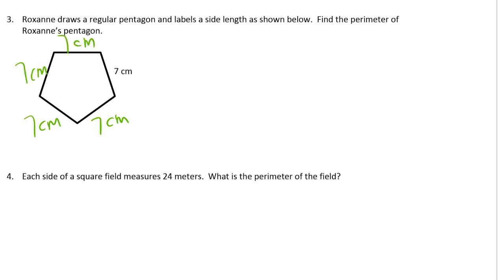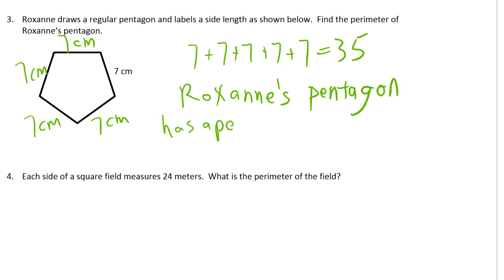There's five of them so it's five sevens and five sevens is 35. And it's a perimeter of 35 centimeters.